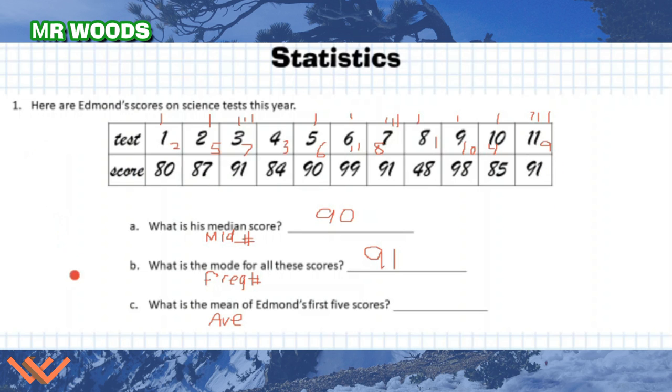Let's look at C. What is the mean of Edmund's first five scores? So that's going to be the average. So what I'm going to do is let's just say this is my range of scores. One, two, three, four, five. Okay. And let's add this up.